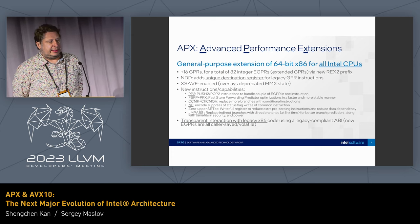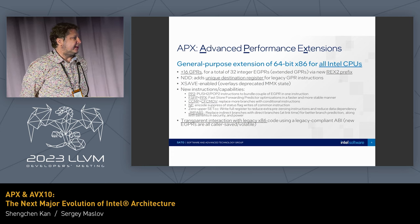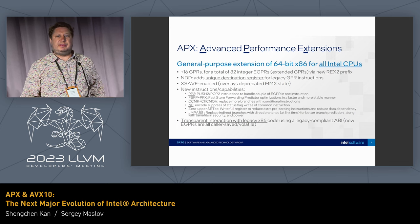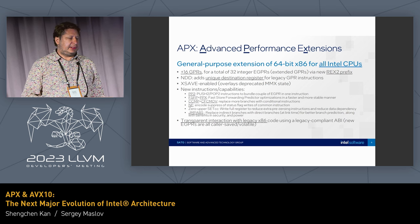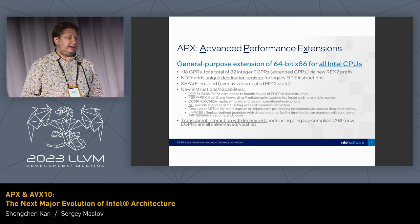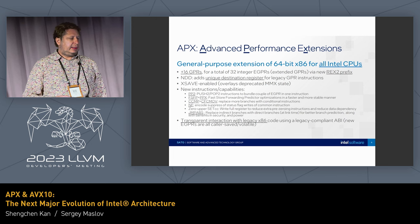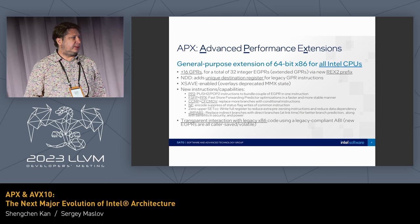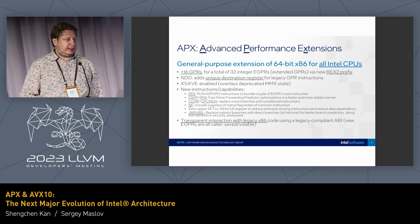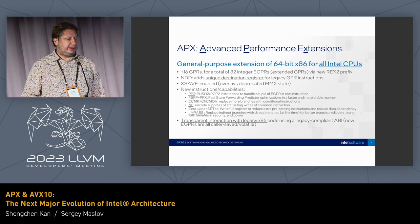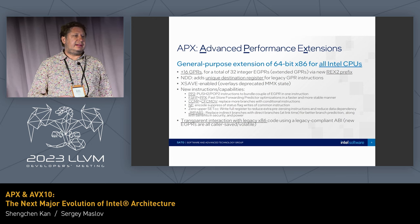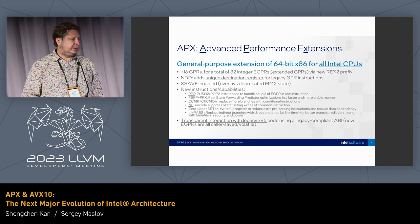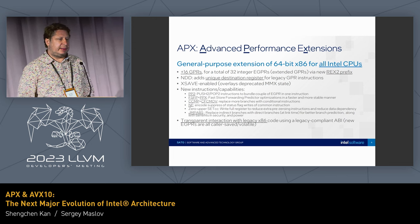The second feature is more interesting — it's a major evolution of the general-purpose ISA. This is a general-purpose instruction improvement being added to 64-bit x86. Like AVX10, it will be supported on all future Intel CPUs. It adds 16 more general-purpose registers encoded with a new prefix, adds a third operand to implement non-destructive destination, and all the new state is XSAVE-enabled, but it doesn't create more XSAVE area because it overlays with a duplicated MMX state.